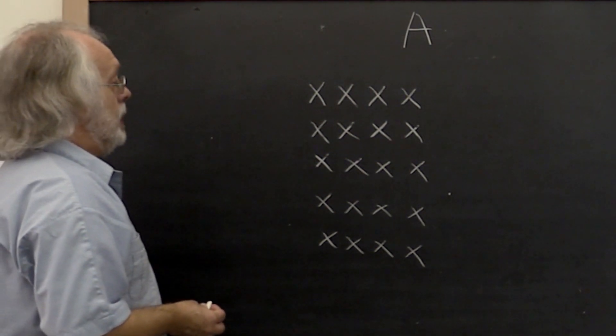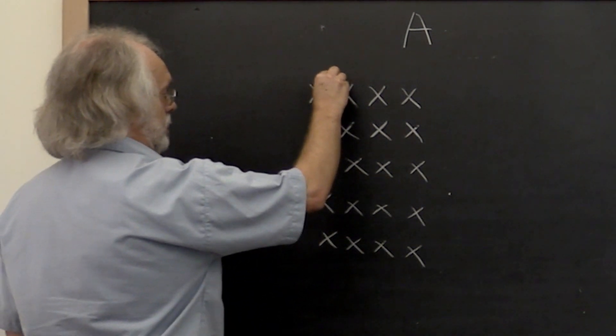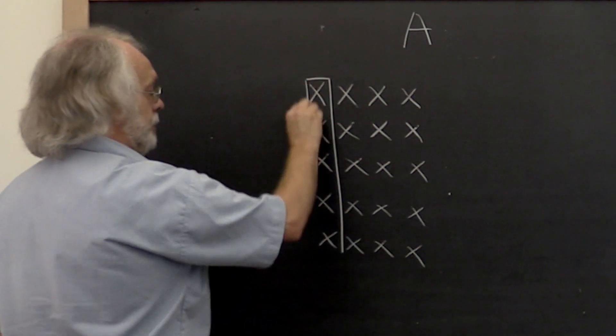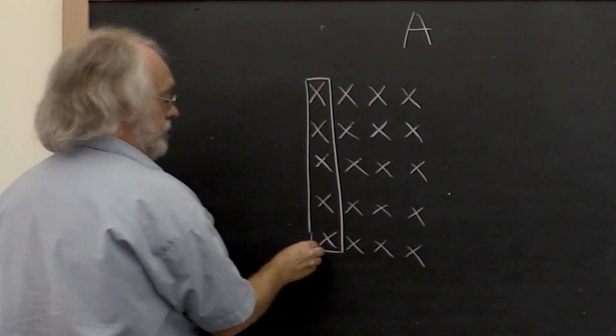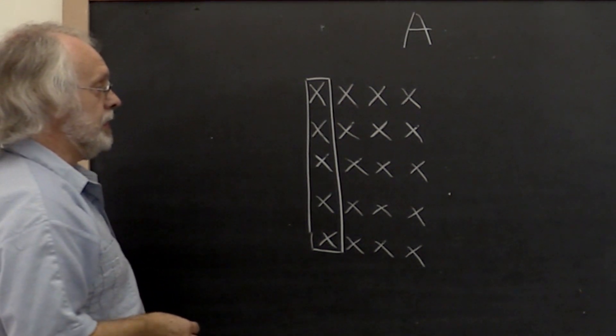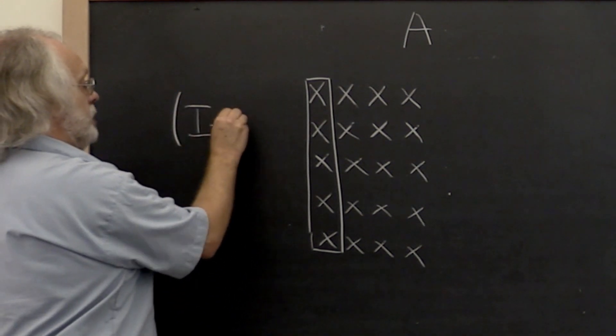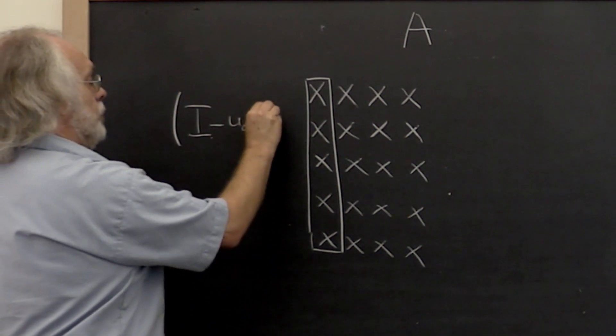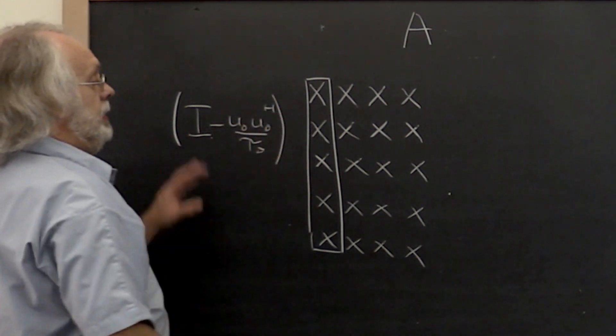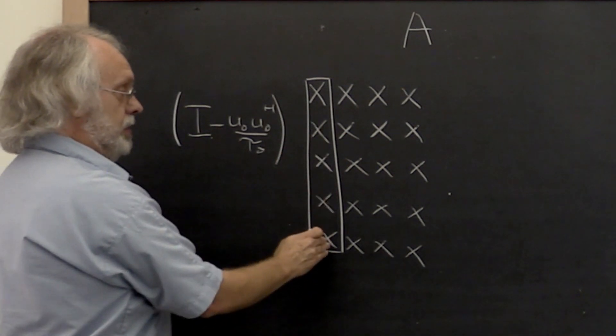And how does the algorithm proceed? Well, you start by identifying the first column of the matrix. And from this first column you compute a Householder vector so that I minus U0 U0 Hermitian transpose divided by tau0. If you apply that to that matrix you end up introducing zeros right here.